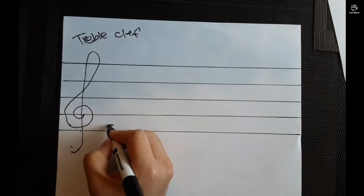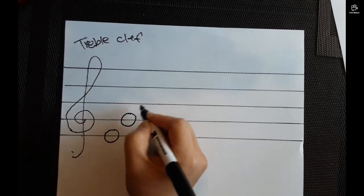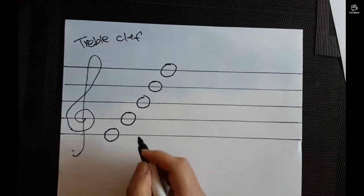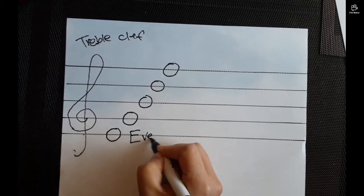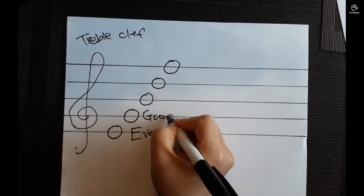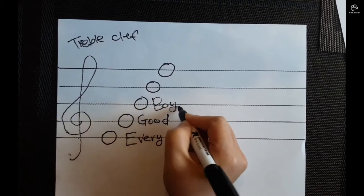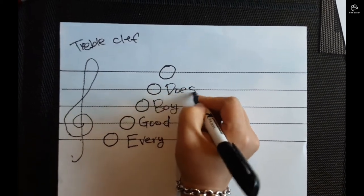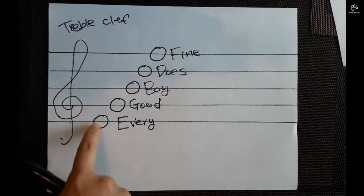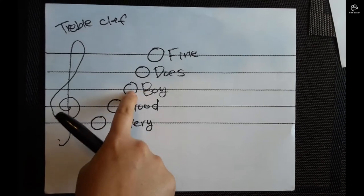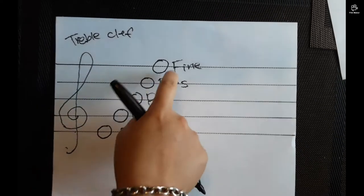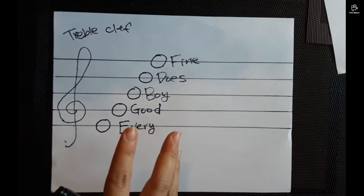Now, do you remember the sentence for the line notes? These are the line notes. Every. The bottom line note is every. Good boy does fine. Now, why are we using that sentence? Because the name of this note is E, G, B, D, F. We have to come up with a sentence that uses E, G, B, D, F.